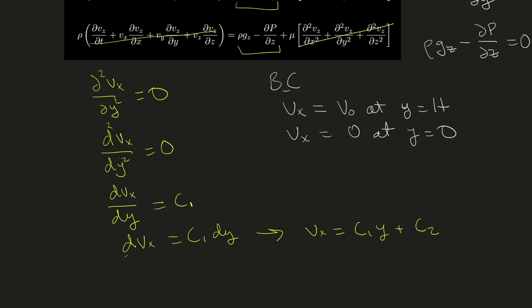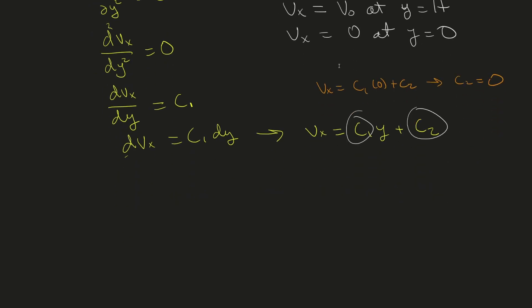To solve for these two constants, we use our boundary conditions. First, if y = 0, we get vx = c₁(0) + c₂. This tells us c₂ equals zero since velocity equals zero at y = 0. For c₁, we use the top boundary condition: v₀ = c₁h, so c₁ = v₀/h. This gives us our solution: vx = (v₀/h)y.